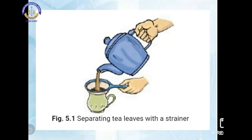As you can see in this picture, while we are making tea, we separate the tea leaves with the help of a strainer. The tea in liquid form comes out from the strainer into the cup, and the tea leaves remain in the strainer. This is called the separation process — here we are separating the tea leaves using a strainer.